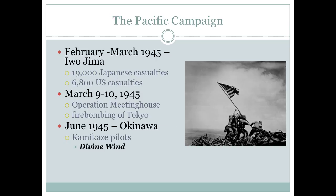February through March 1945, the famous Battle of Iwo Jima takes place. You can see the picture where U.S. Marines are raising the flag at Iwo Jima. There were 19,000 Japanese casualties out of just over 20,000 Japanese on the island — they were willing to fight to the death. Nearly 7,000 American casualties in taking this one island. This is what really got into the mind of the American military: if they were going to actually invade Japan, it would cost millions of lives on both sides.